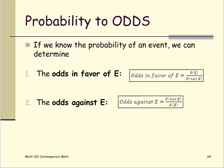Probability to odds. If we know the probability of an event, we can determine the odds in favor of E as the probability of E divided by probability of not E.